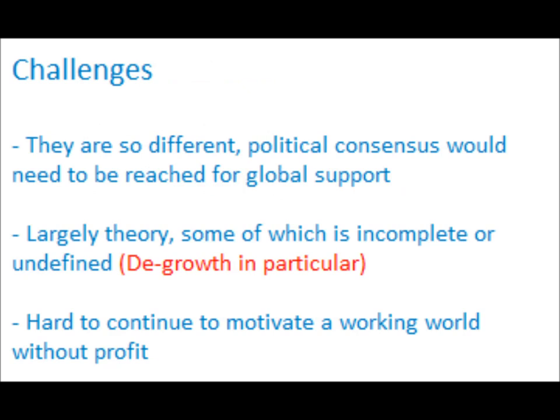The use of social ownership is considered important in enabling socially beneficial decisions, as cooperatives can vote with their feet more heavily — entire groups at a time choose whether or not to purchase a product based upon its value or its means of production. There are a series of challenges to all three economic systems: they are so different from mainstream economic theory that political consensus would need to be reached for global support, which is extremely difficult to achieve. These economic systems are also largely theoretical, without historical evidence of their success. Some theories are incomplete or undefined — degrowth in particular has five different definitions. The final challenge is that it is hard to continue motivating a working world without the notion of profit; reducing consumption is one thing, but if we find ourselves unable to provide for ourselves at all, would that be more or less damaging to society?